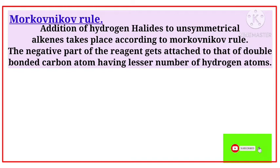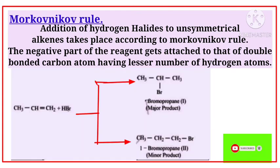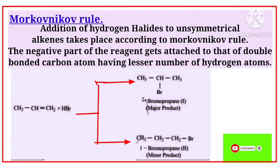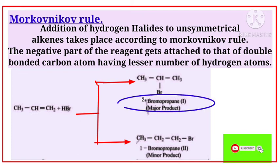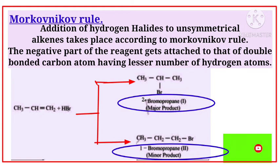Look at this example: CH₃-CH=CH₂, which we name as 1-propene. When 1-propene reacts with hydrogen bromide (HBr), it produces 2-bromopropane and 1-bromopropane. The 2-bromopropane is the major product and 1-bromopropane is the minor product, following Markovnikov rule.